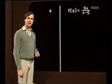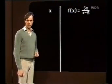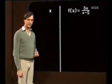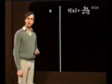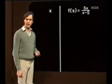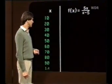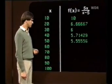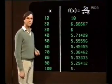Einen weiteren Aufschluss über das Verhalten der Funktion für x gegen Unendlich liefert uns die Wertetabelle — wir lassen sie von unserem Computer aufstellen. f(x) ist die Bildweite, und wir geben verschiedene Gegenstandsweiten x ein, bei zehn beginnend zunächst in Zehnerschritten. Und hier die Funktionswerte. Auch hier sieht man sehr deutlich: f(x) strebt offensichtlich gegen fünf.